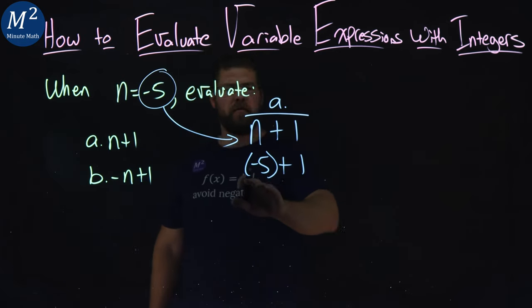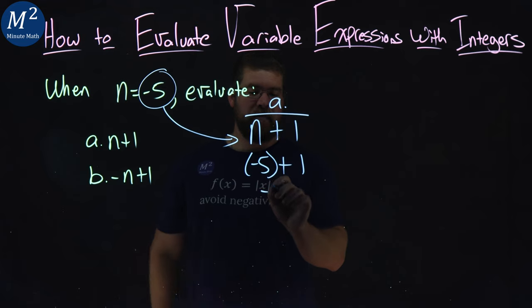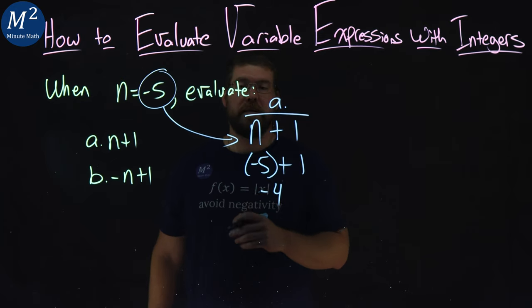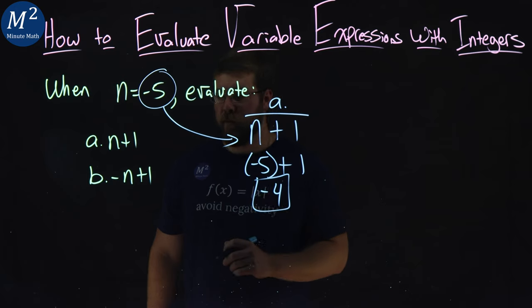Now from here, negative 5 plus 1. Hopefully you're getting better with this, but negative 5 plus 1 is going to be negative 4. So we're finding a difference between the two numbers, which is 4 if you ignore the negative sign. But our final answer here has to be negative. So negative 5 plus 1 is negative 4.